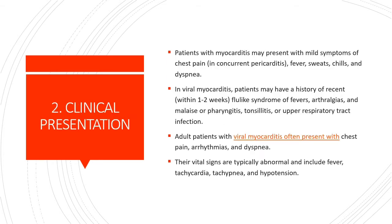In this slide, the clinical presentation of myocarditis will be discussed. Patients may present with mild symptoms of chest pain in concurrent pericarditis, fever, sweats, chills, and dyspnea. In viral myocarditis, patients may have a history of a recent flu-like syndrome within one to two weeks — with fevers, arthralgias, and malaise — or pharyngitis, tonsillitis, or upper respiratory tract infection.